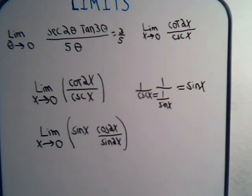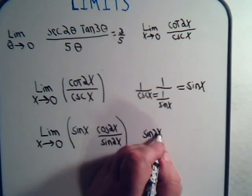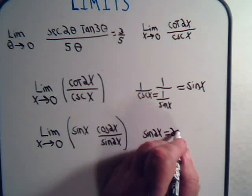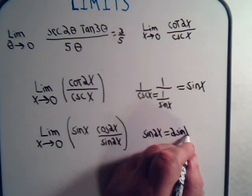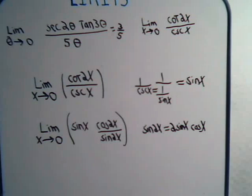And let's see. We can't just plug it in though, because this will give us 0, and this will give us 0. Again, we're stuck with 0 over 0. But hopefully you're taking a real close look at this. Because once again, we have a double angle formula. The sine of 2 times x equals 2 times the sine of x times the cosine of x. So let's put that in there.